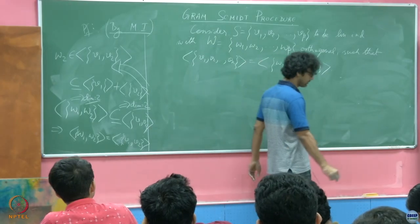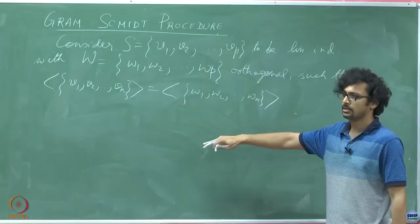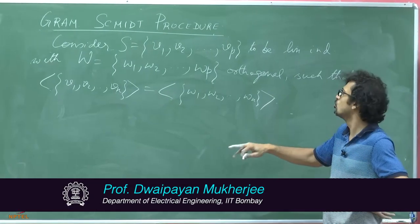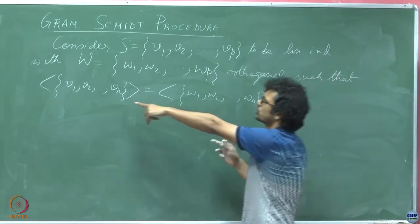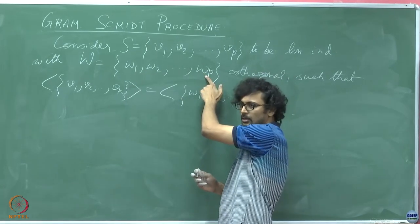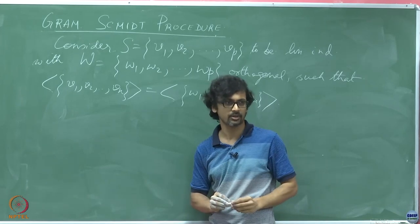So now in this module we shall carry on with this, and we shall see that when we extend this P to P plus 1, how do we choose the P plus first vector? This assumes that we already have W1 through WP which meets the conditions for Gram-Schmidt construction, Gram-Schmidt procedure.